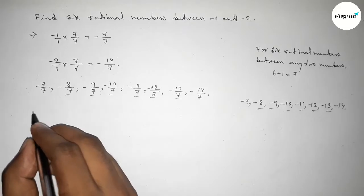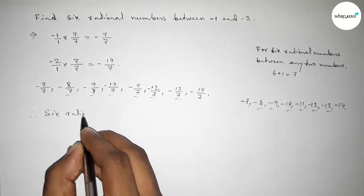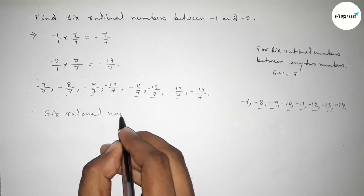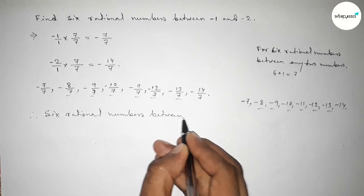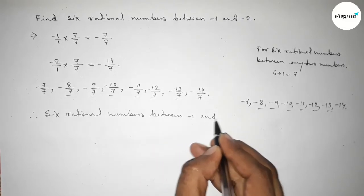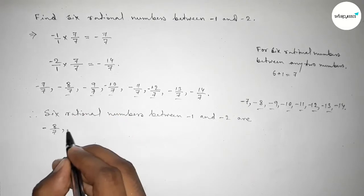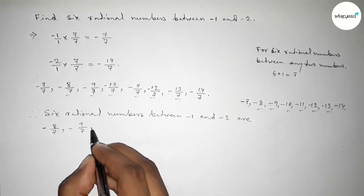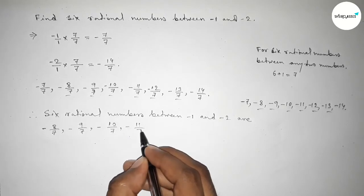So first write down all the rational numbers among these, and these are the required six rational numbers between minus 1 and minus 2. So therefore, six rational numbers between minus 1 and minus 2 are minus 8 over 7, minus 9 over 7, minus 10 over 7, minus 11 over 7, up to minus 13 over 7.